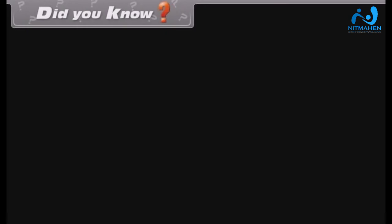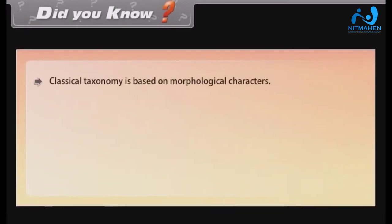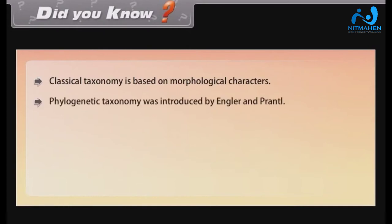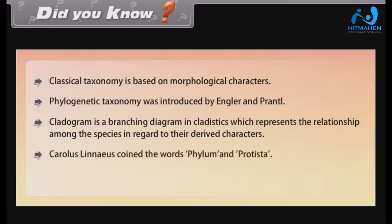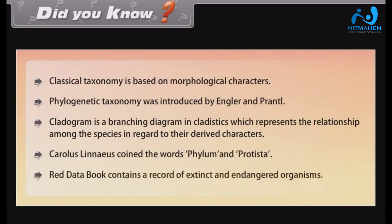Did you know? Classical taxonomy is based on morphological characters. Phylogenetic taxonomy was introduced by Engler and Prantl. A cladogram is a branching diagram in cladistics which represents the relationship among species with regard to their derived characters. Carolus Linnaeus coined the words phylum and Protista. The Red Data Book contains a record of extinct and endangered organisms.